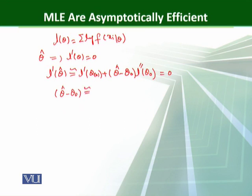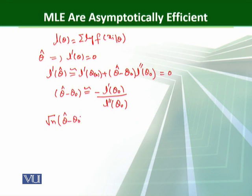Setting this equal to 0, we find that (theta hat minus theta naught) is approximately equal to minus L dash theta naught over L double dash theta naught. Now multiplying both sides by under root n, we get under root n times (theta hat minus theta naught) approximately equal to minus n to the power minus one-half times L dash theta naught, over n to the power minus 1 times L double dash theta naught.